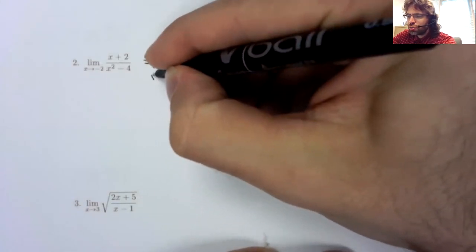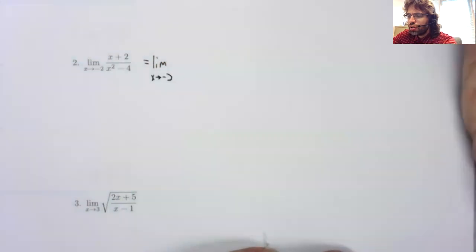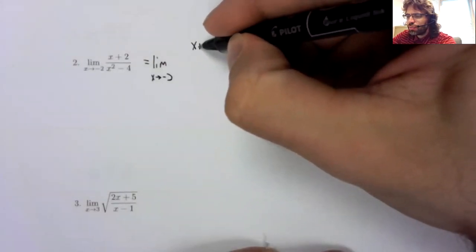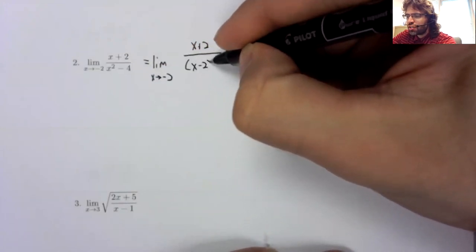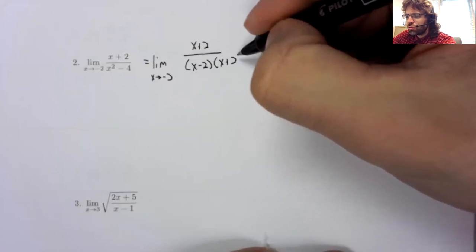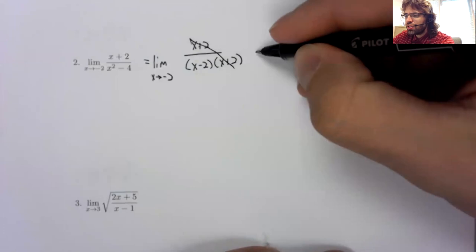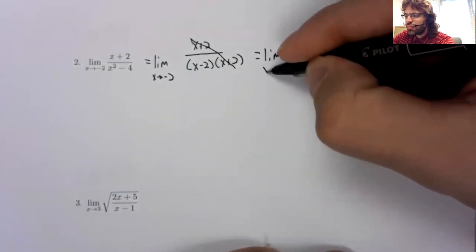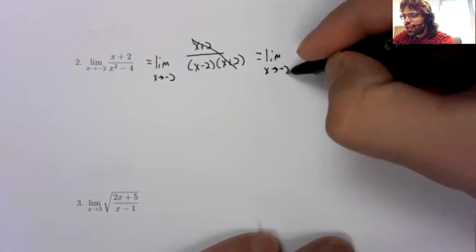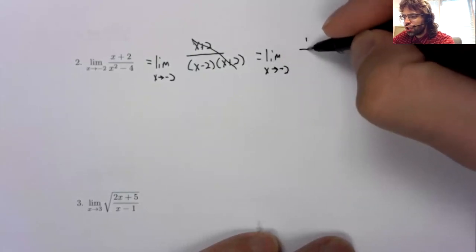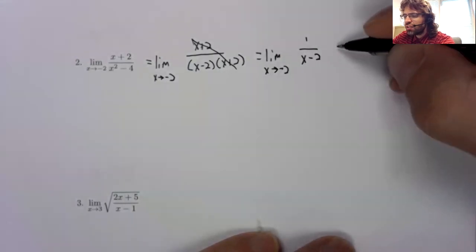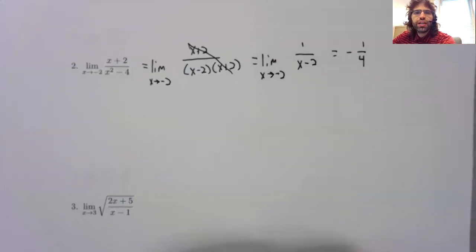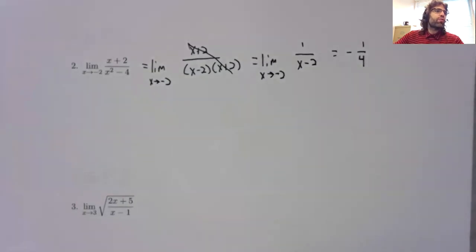The trick with rational functions, when you have a division by zero error, is to factor and cancel, and then try again. And you might still get a division by zero error, in which case the limit doesn't exist, but that doesn't happen here. We get a negative one-fourth.